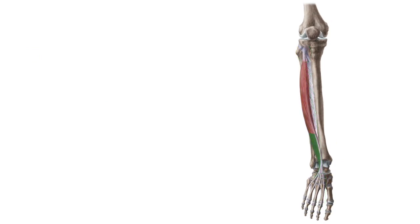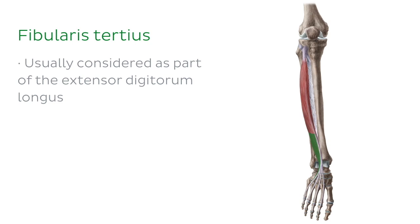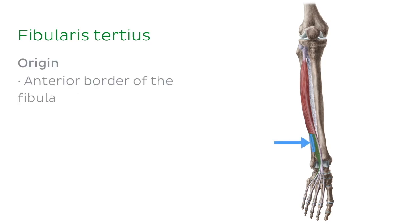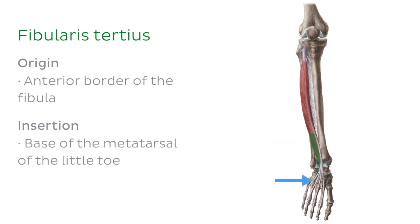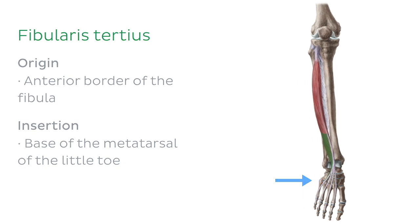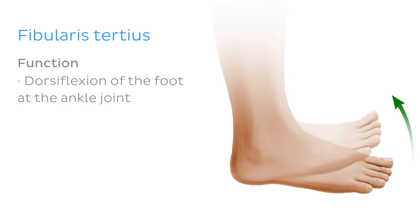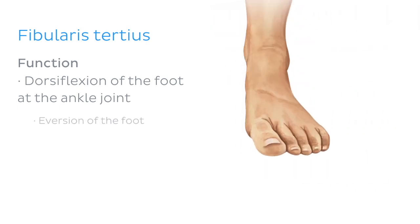The fibularis tertius is normally connected to the extensor digitorum longus and is therefore usually considered as part of this muscle. It originates from the anterior border of the fibula and inserts onto the base of the metatarsal of the little toe. When the fibularis tertius contracts, it causes dorsiflexion of the foot at the ankle joint and eversion of the foot.